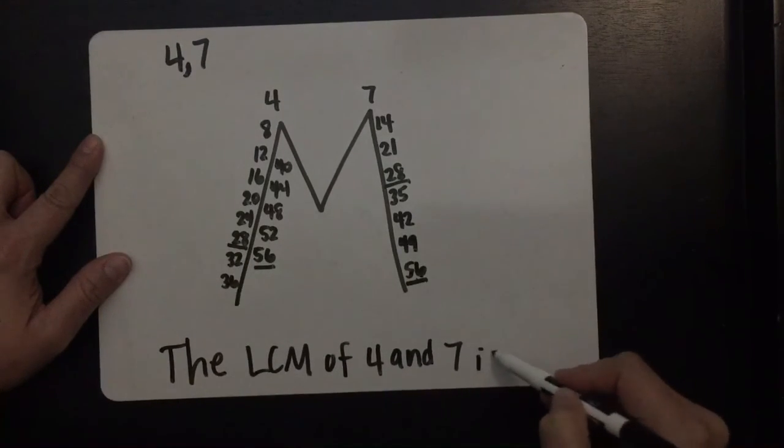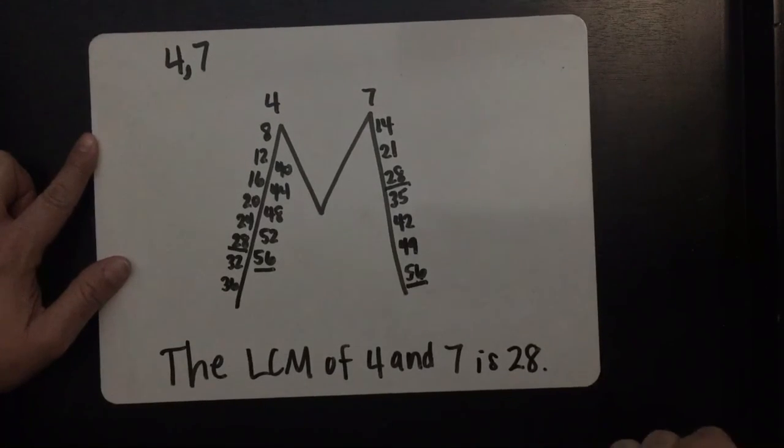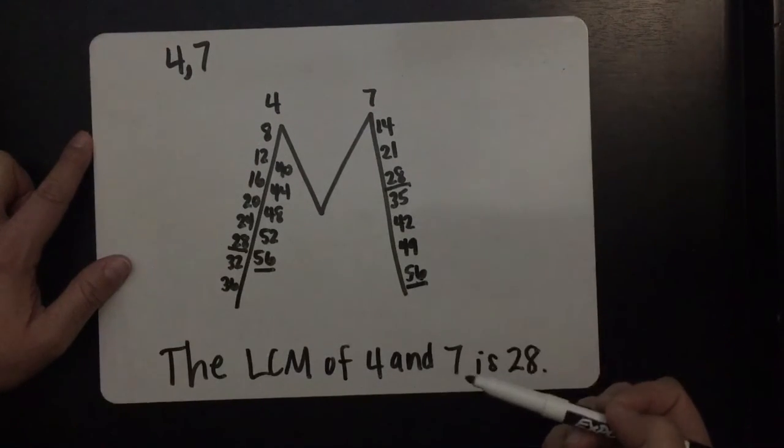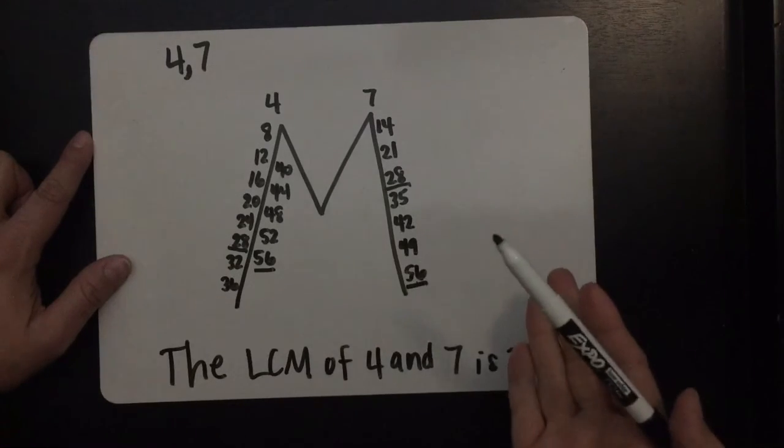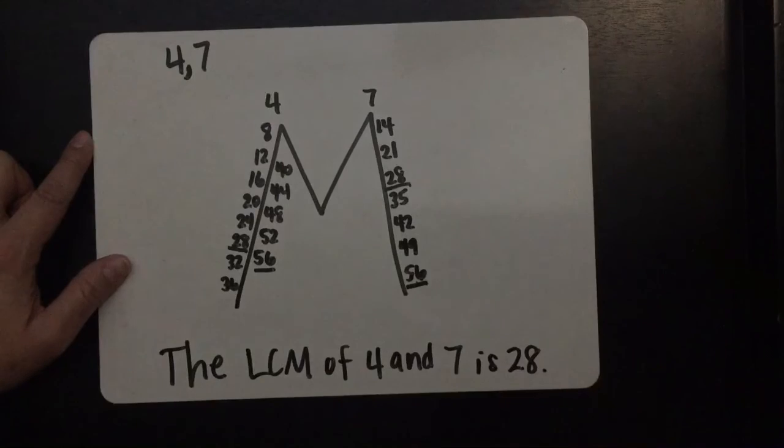So as long as you do your work and list out the multiples, you'll be sure to find all the multiples that the numbers have in common, including the least common multiple. Good luck.